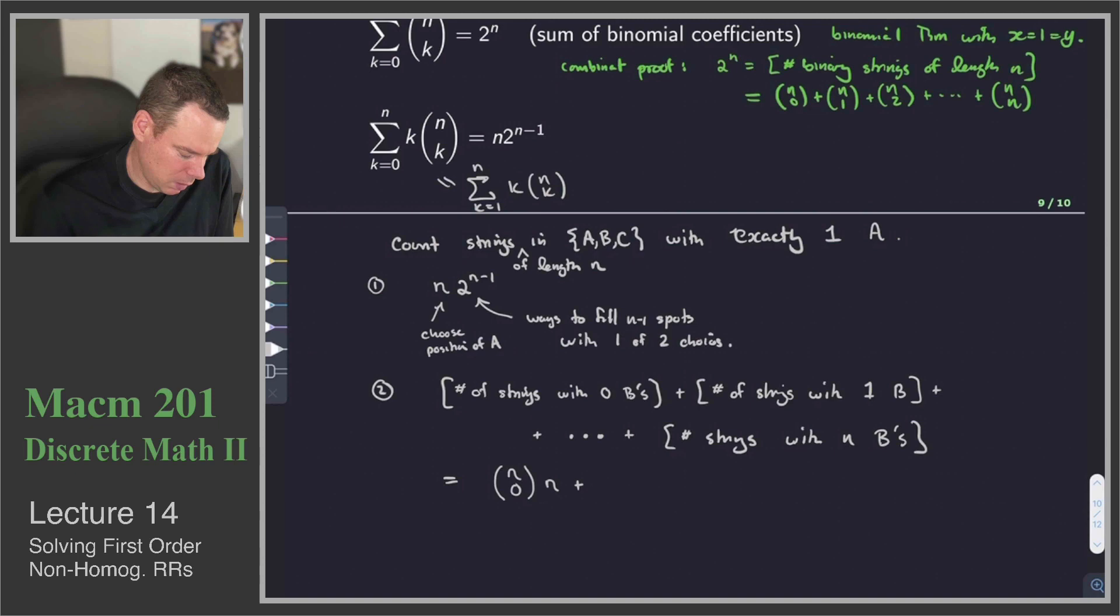How do we get a string with 1 b? Of the n spots, pick one spot where the b is. Of the remaining n minus 1 spots, there are that many ways to pick the place for the a. It's n minus 1 choose 1. And then the remaining spots get the c's.